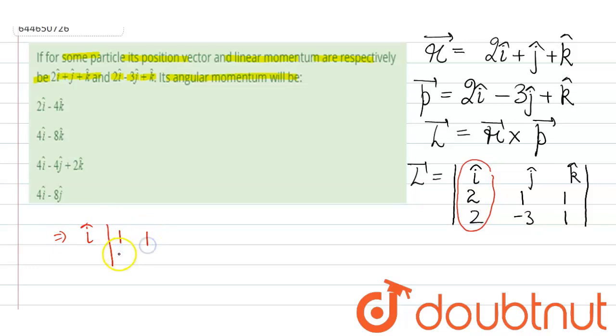1, 1; minus 3, 1. Next we hide the jth column, so we write here 2, 1; 2, 1. Next we write the k cap and we write here 2, 1; 2, minus 3.